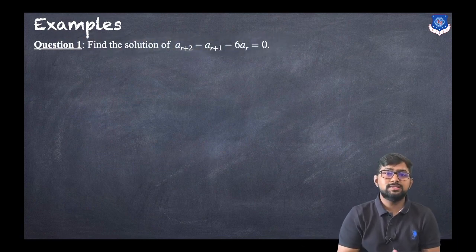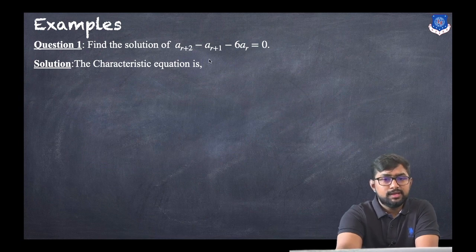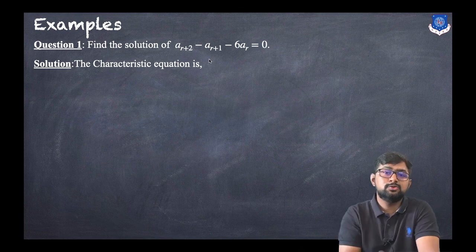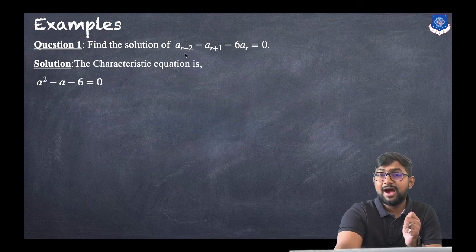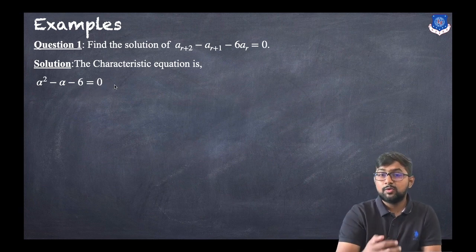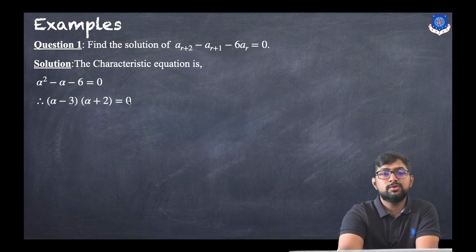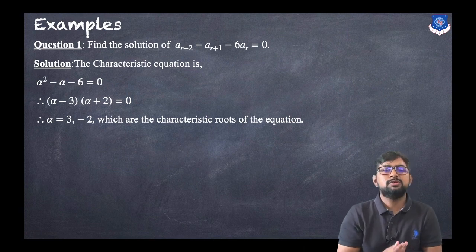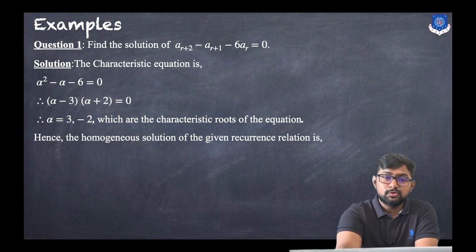Let us find the solution of a_{r+2} - a_{r+1} - 6 * a_r = 0. First, note the right-hand side is 0, so it is a homogeneous linear recurrence relation. The order is 2 (from r + 2), so the characteristic equation starts from α^2: α^2 - α - 6 = 0. Factoring gives (α - 3)(α + 2) = 0, so α = 3 or α = -2.